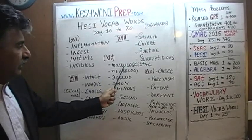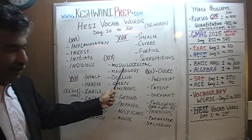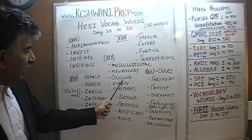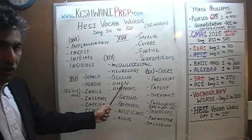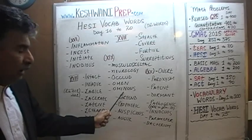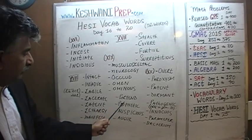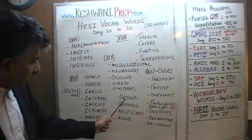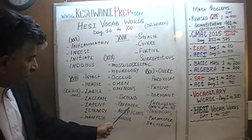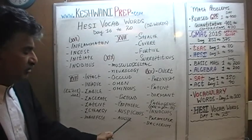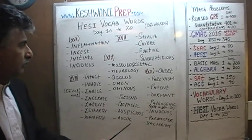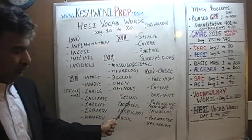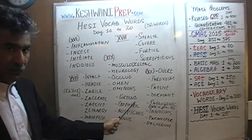Day number 19, we learned musculoskeletal, neurology, occult, omen, ominous, portent, prophetic, auspicious, and auger. Portent — with a D at the end. Portent.